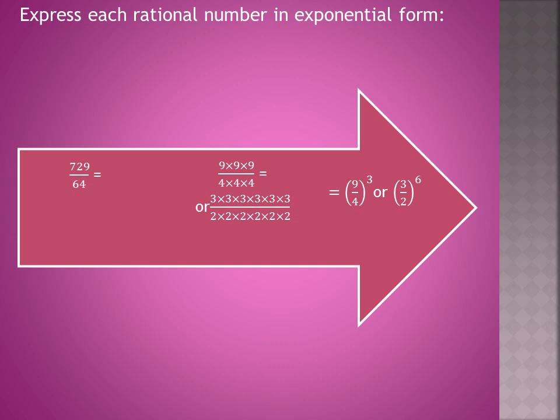First, we make the factors of 729 and secondly for the 64. It is better to take the smallest factor. 9 to the power 3 is the factors of 729 or 3 to the power 6 is also the factors of 729. 4 to the power 3 or 2 to the power 6 is also the factors of 64 and this is exponential form for 729 upon 64.